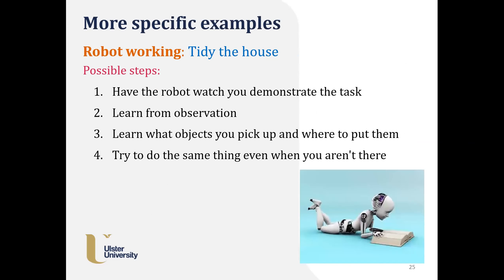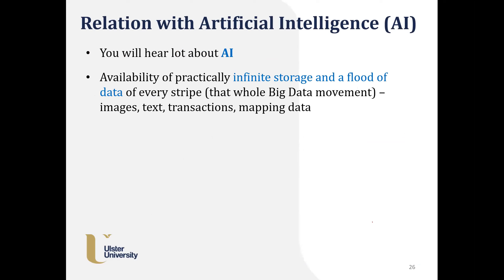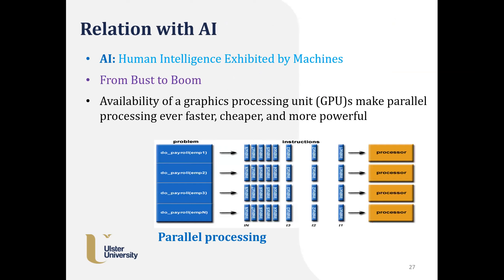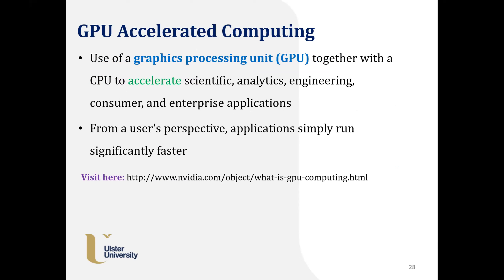Self-driving Google cars are quite commonly talked about. If a robot is deployed to tidy your house, it will run, learn from your observations, analyze data in the background, learn what objects you pick and where you put them, and then do the same when you're not there. Availability of practically infinite storage and a flood of data has created this AI boom, enabled by GPU-accelerated computing where events run in parallel — things run faster.